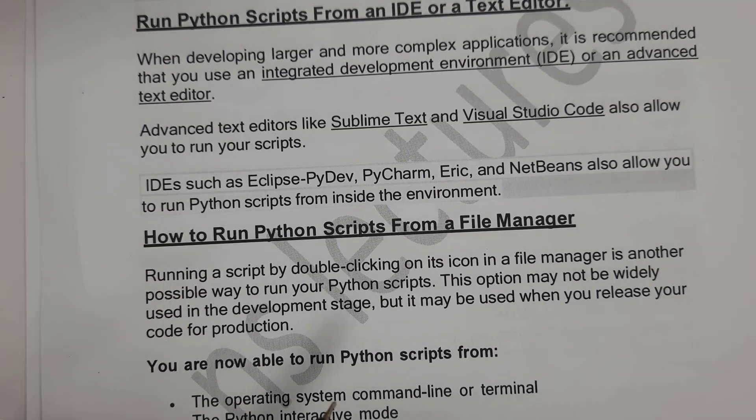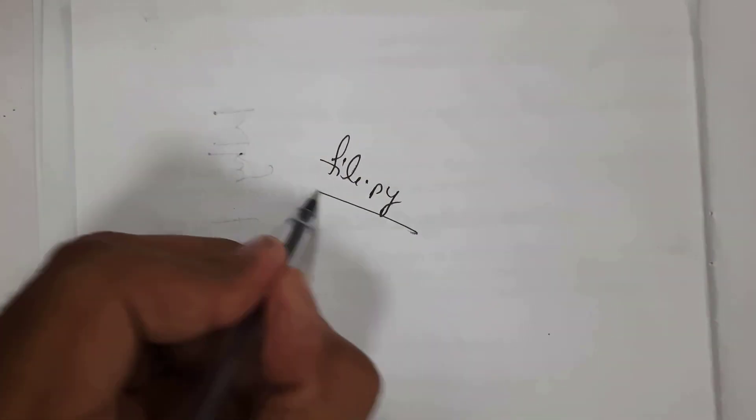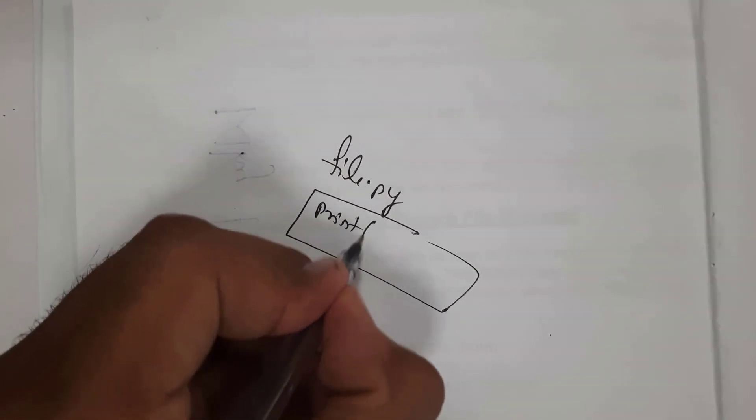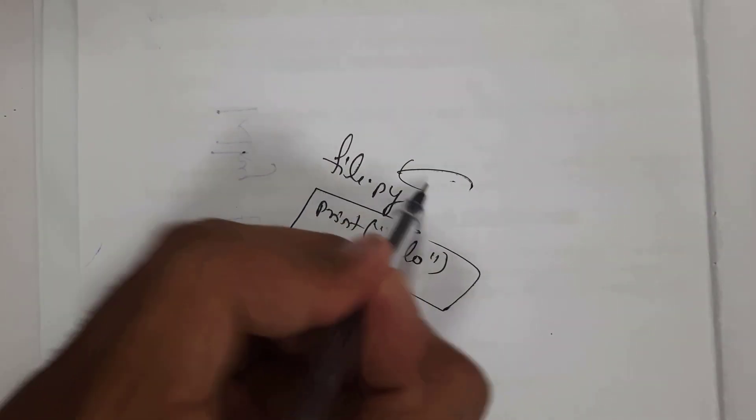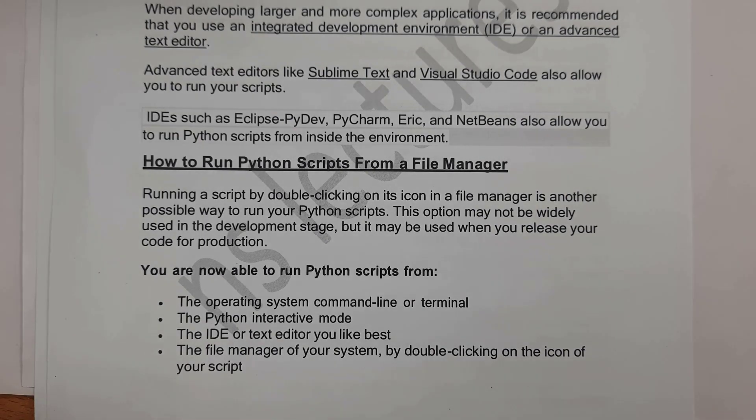You can also run Python scripts from a file manager. For example, I created a file called file.py. Inside this file, I write a Python script like print hello. When you double-click on this file, you will get the output hello. This is the fourth way. These are four ways to execute Python scripts.